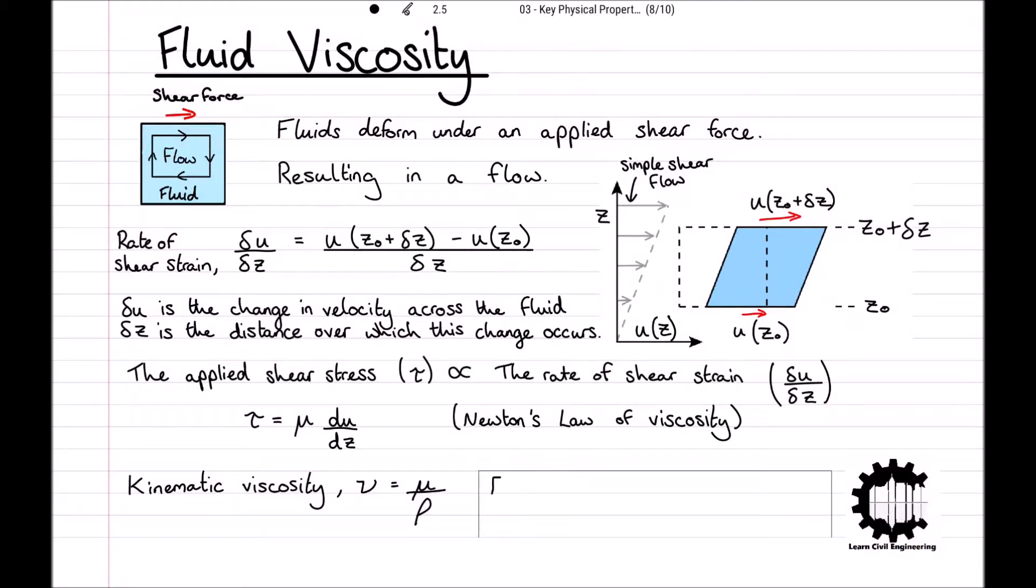Dynamic viscosity has dimensions of m, L to the power of minus 1, T to the power of minus 1, and SI units of kilograms per metre per second, or pascal seconds. And kinematic viscosity has dimensions of L squared times T to the power of minus 1, and SI units of metre squared per second.